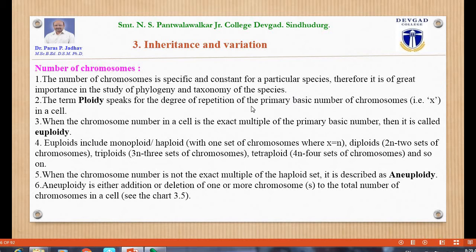The term ploidy refers to the degree of repetition of the primary basic number of chromosomes, that is x, in a cell. When the chromosome number is an exact multiple of the primary basic number, it is called euploidy. Euploidy includes monoploidy, haploidy with one set of chromosomes where x equals n, diploidy where n equals two sets, triploidy 3n, tetraploidy 4n, and so on. When the chromosome number is not an exact multiple of the haploid set, it is described as aneuploidy.